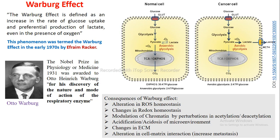Today we are going to understand the Warburg effect. The Warburg effect is defined as an increased rate of glucose uptake and preferential production of lactate even in the presence of oxygen. In a normal cell, glucose is converted into pyruvate, which enters the mitochondria where the TCA cycle is carried out, and the end product is CO2 along with reducing equivalents that harness ATP for the cell — this happens in the presence of oxygen.